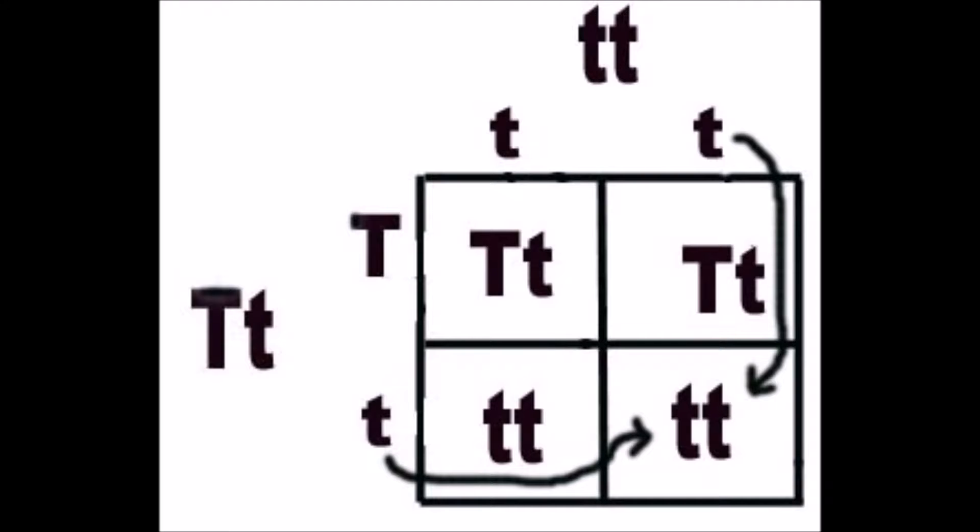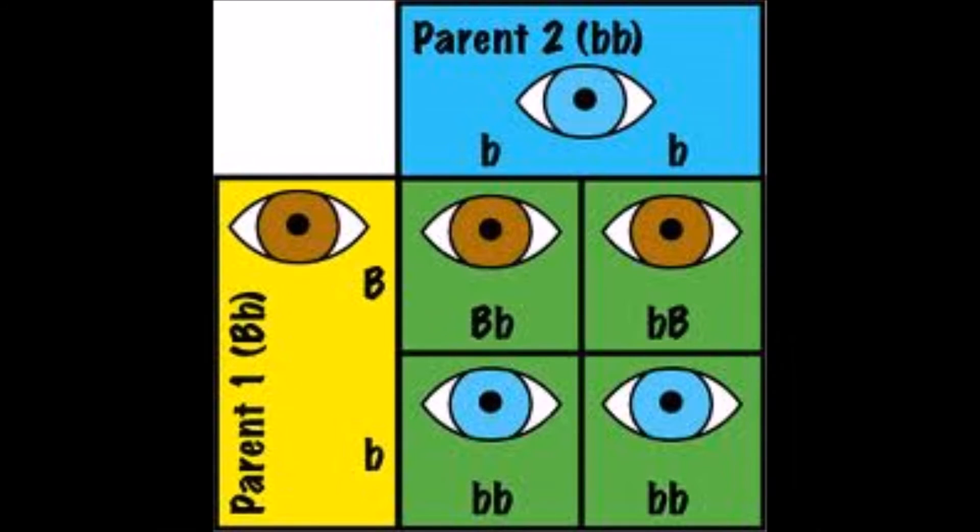If papa's hair is straight, that means papa has two recessive genes. For if one dominant gene were there, papa, of course, would have curly hair.